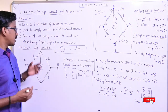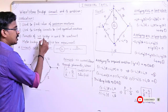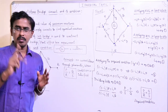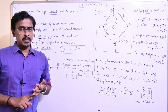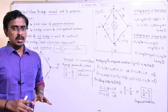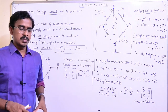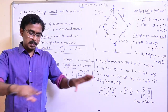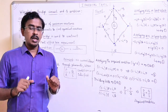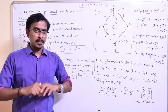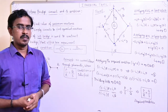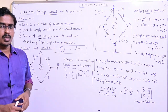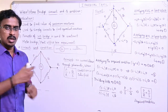The principle of the Wheatstone Bridge is used to construct the meter bridge and the post office box experiment. These are two types of experiments. Both circuits are used to find unknown resistance. We will discuss the meter bridge and post office box in the next lecture.